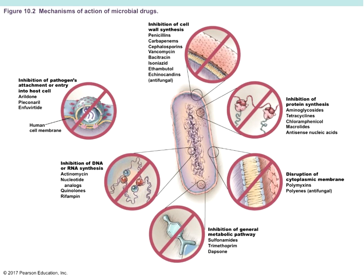Mechanisms of antimicrobial drugs: some inhibit the synthesis of the cell wall — penicillin, cephalosporins, and vancomycin actually prevent the bacteria from making more cell wall. If they can't make more cell wall, they can't prevent osmotic lysis, and they're going to either swell and burst in a hypotonic solution or shrink. Some drugs inhibit protein synthesis — tetracyclines do a great job of that.